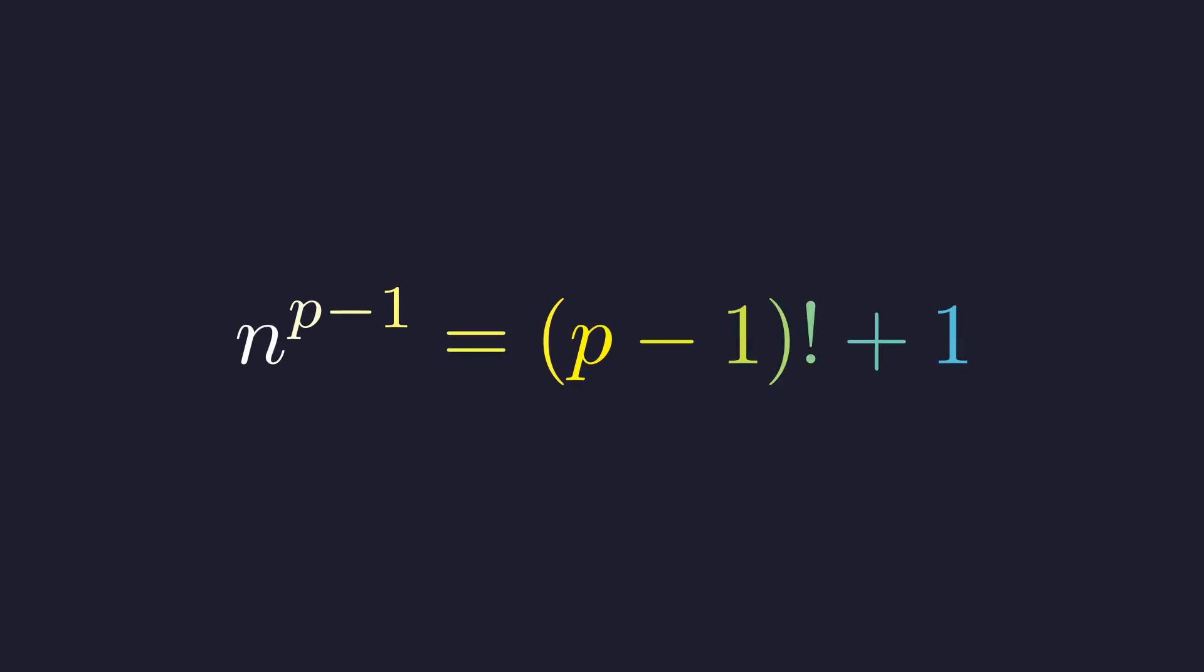We're tasked with finding all positive integer pairs n and p, where p is a prime, that satisfy this beautiful equation from the 1999 International Math Olympiad. It's a classic that perfectly marries factorials and exponents.